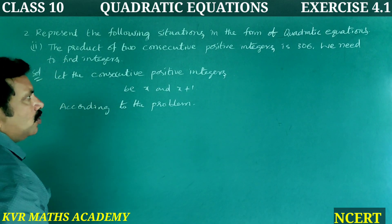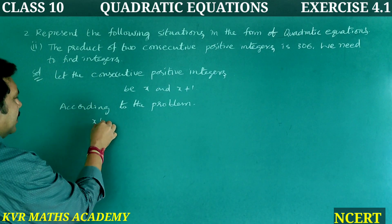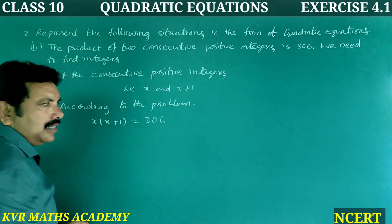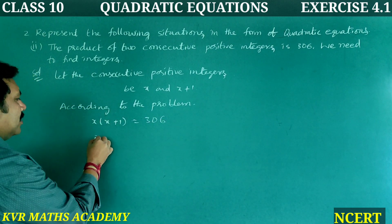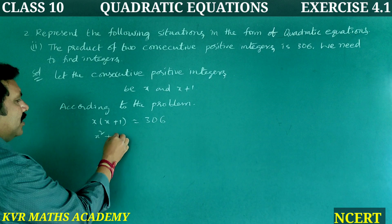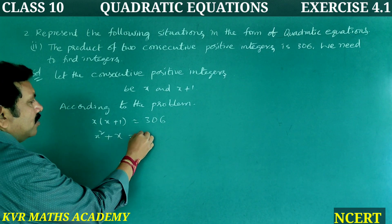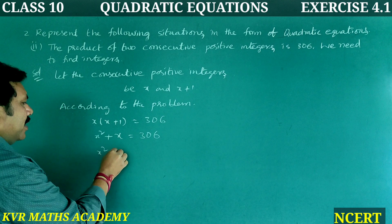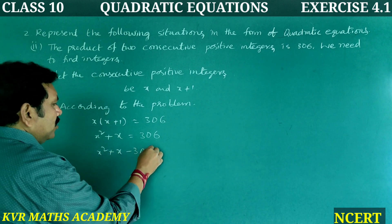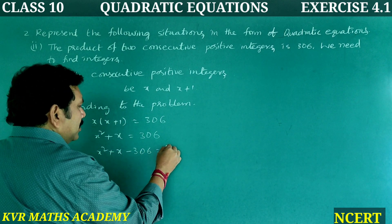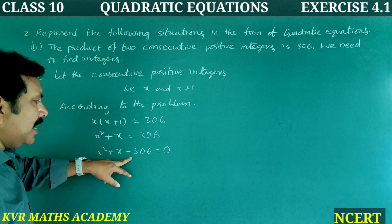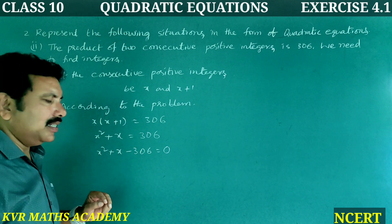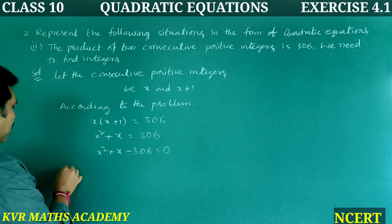Product of the numbers is equal to 306. So X × (X + 1) = 306, which gives X² + X = 306. Transferring to this side: X² + X − 306 = 0.